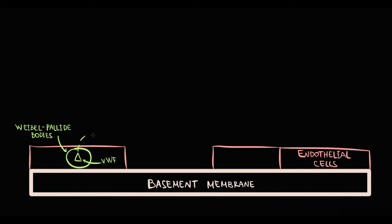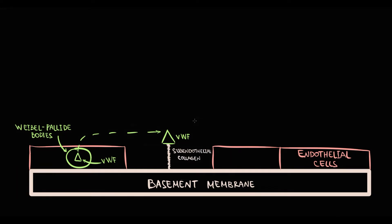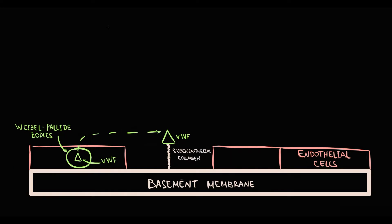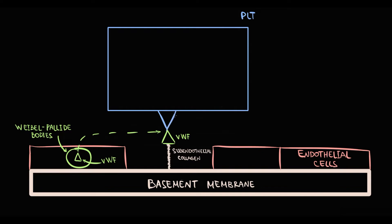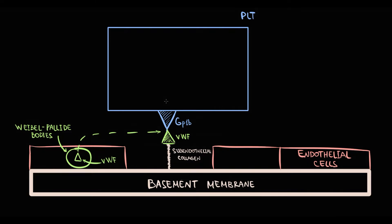In the bloodstream, von Willebrand factor binds to subendothelial collagen under the disrupted endothelial cell. After that, platelets come to the site of injury, and by the specific receptor GP1B they bind to von Willebrand factor. This step is called platelet adhesion.